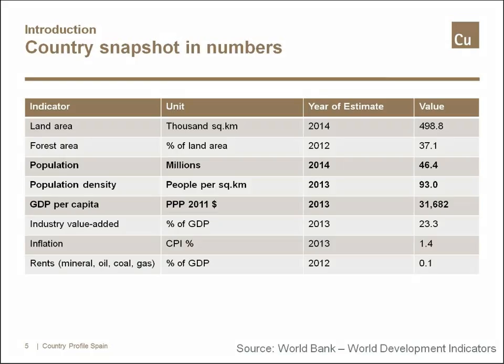Spain has 46 million inhabitants and a land area of half a billion square kilometers, giving it rather low population density when compared to other European countries like Germany or even higher density countries like Belgium. GDP per capita is around 31,000 to 32,000 dollars per year, which is close to the EU average of around 55,000.